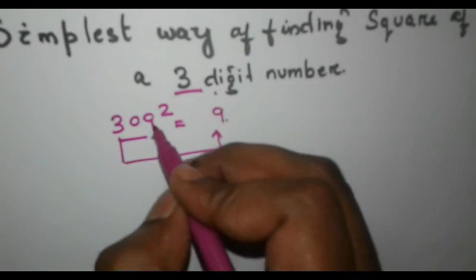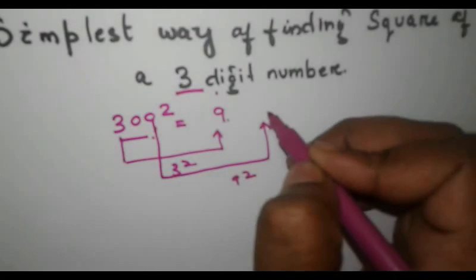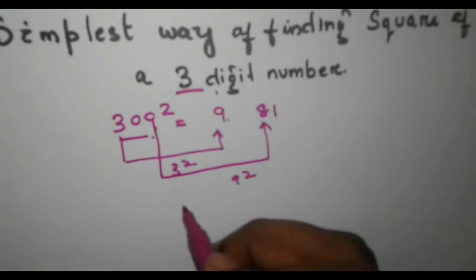Next, you take 9, square it and write it over here. So 9 square is 81. Next, what you have to do?